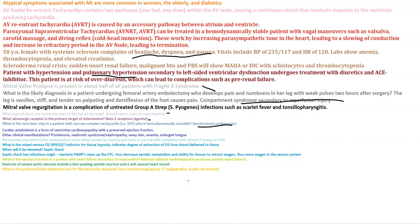Cardiac amyloidosis is a form of restrictive cardiomyopathy with preserved ejection fraction. Other manifestations of amyloidosis include proteinuria, nephrotic syndrome/nephropathy, waxy skin, anemia, and enlarged tongue. Paroxysmal supraventricular tachycardia is most often caused by reentry and leads to narrow QRS complexes with absent P waves on EKG.